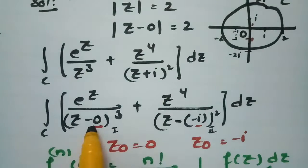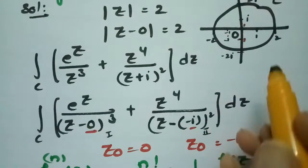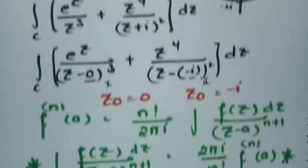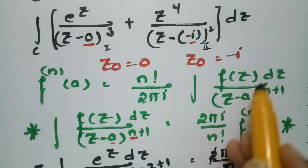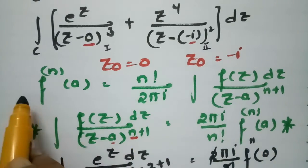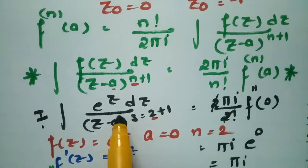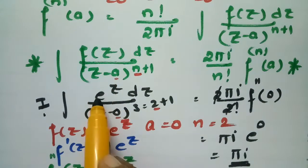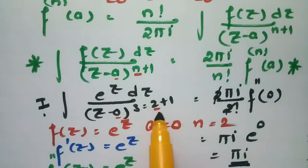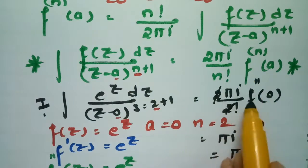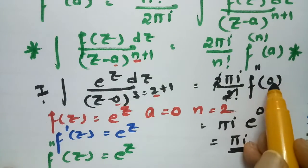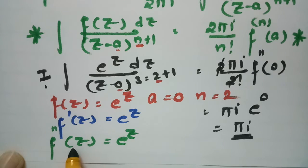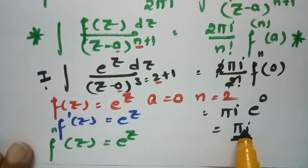To summarize: the contour |z| = 2 is a circle with center 0 and radius 2. Both singular points 0 and −i lie within the circle, so Cauchy's integral formula applies. For the first integral, f(z) = e^z, a = 0, n = 2, giving first integral value = πi.